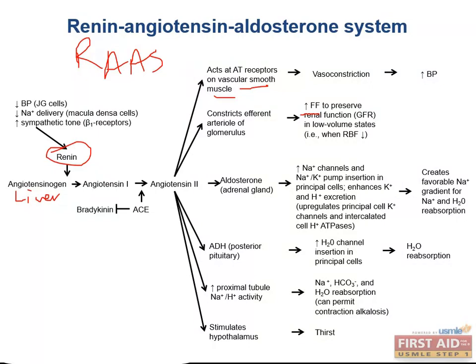Finally, angiotensin 2 stimulates sodium reabsorption in the proximal tubule, bringing water with it, and stimulates the hypothalamus to give a sense of thirst to replenish body fluids. In total, these six mechanisms by which angiotensin 2 increases blood pressure have a really important place in antihypertensive therapy. For example, a drug like enalapril, which is an ACE inhibitor, is so effective in reducing blood pressure because it makes all six of these pathways less effective.